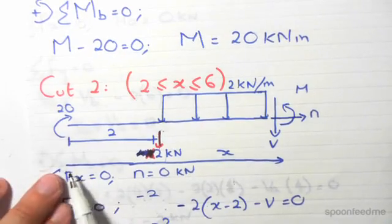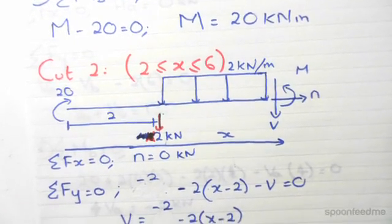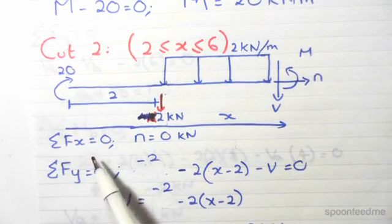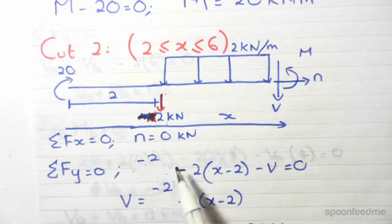Okay so everything is a function of x, our sign convention is shown. So now all we have to do is just equilibrium once again. Sum of forces in the horizontal direction equals 0. n is the only axial force so n is 0.